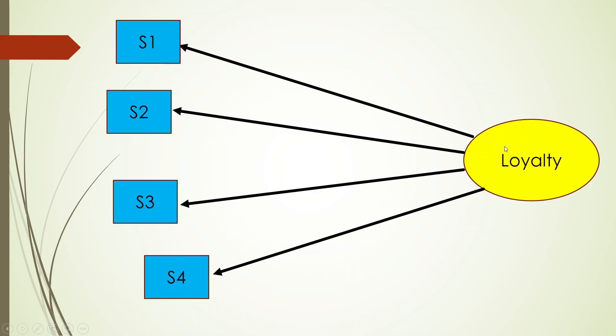So here we require such statements which are having high explanatory power or can explain high variance on loyalty. So loyalty is a construct which cannot be directly captured. So instead of this we are using some measured variables, some statements which will represent the loyalty.